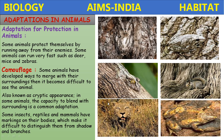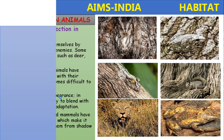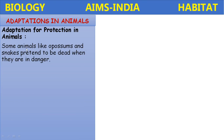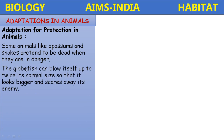For example, zebras and tigers possess stripes which help them hide and ambush. Another adaptation for protection: some animals like opossums and snakes pretend to be dead when in danger, then become normal when the threat has passed. The globe fish can blow itself up to twice its normal size so that it looks bigger and scares away its enemies.